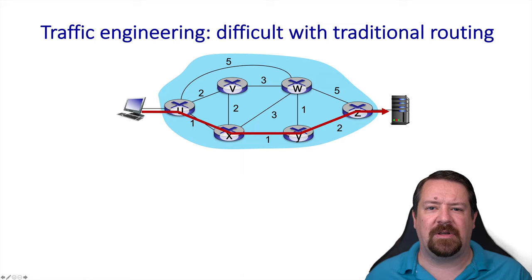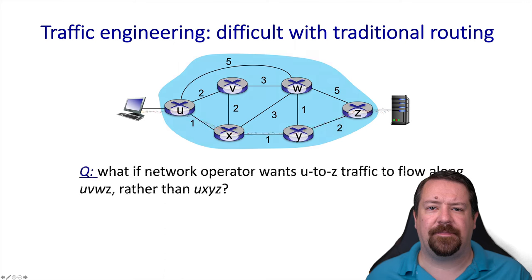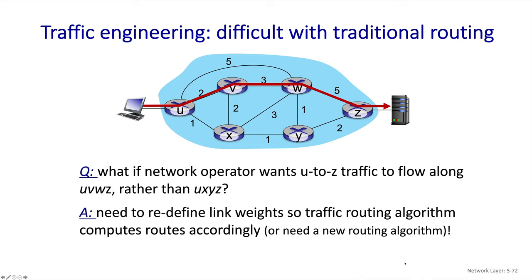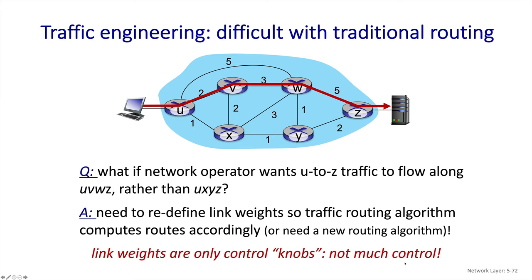Here we'll look at a straightforward traffic engineering task that is difficult to accomplish using traditional routing protocols. The flow of traffic from U to Z follows the least cost path through the network, as we would expect. However, if an operator needs to change the path for traffic engineering reasons, with traditional routing we need to redefine the link weights so that the new path becomes the lower cost path. But manipulating the link weights affects all other flows through the network, not just the one we're trying to control.